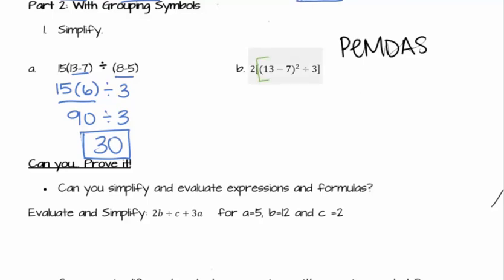So, inside these brackets, all of that has to happen first before I can do anything outside the brackets. And then inside those brackets are parentheses. So, that is top priority. So, everything is going to stay the same, except inside of those parentheses, I'm going to simplify what 13 minus 7 is. That's just 6.